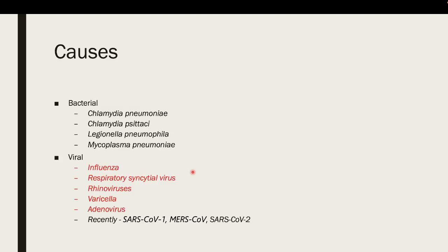The main causes of atypical pneumonia can be divided into bacterial and viral. For bacteria, the four organisms stated in your textbook are Chlamydia pneumoniae, Chlamydia psittaci, Legionella pneumophila, and Mycoplasma pneumoniae.